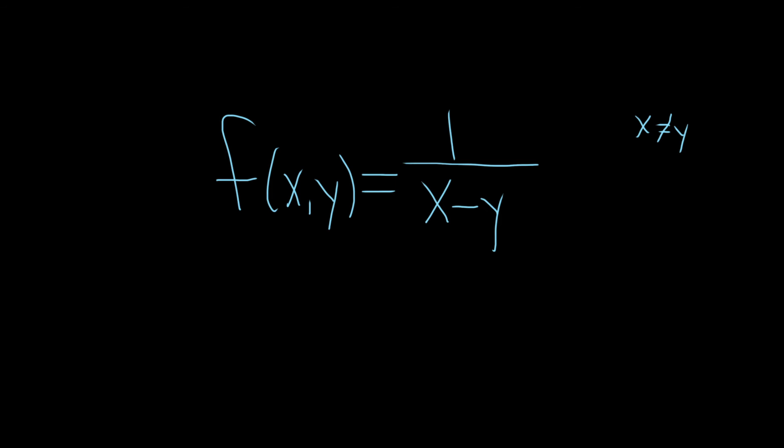So now we can write our answer using set notation. So this is the notation you use. It's like a curly bracket. So it's the set of all ordered pairs such that x is not equal to y. And that would be a perfectly acceptable answer.